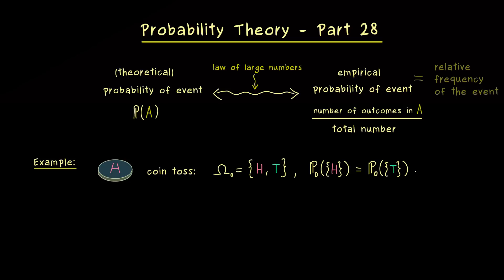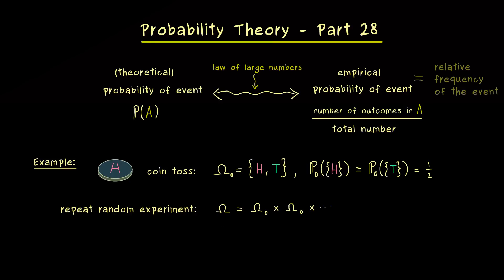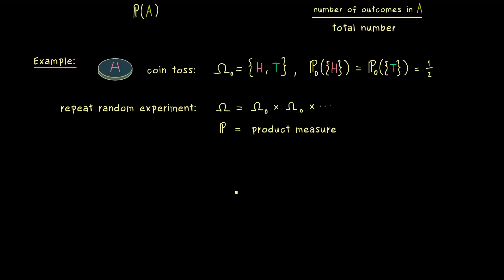Now if we want to talk about the relative frequency of a given event, we have to repeat this random experiment as many times as we want. Therefore the model for that would be a new sample space given as a product space. Repeating it infinitely many times means we have a Cartesian product with infinitely many factors, and the corresponding probability measure is given as a product measure. From former videos you already know how this works in detail.